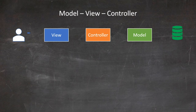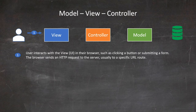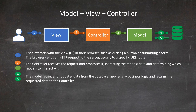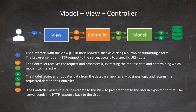First, the user interacts with the UI — such as clicking a button or submitting a form — which is then routed to the running application. The controller receives the request and processes it by extracting data from the request and determining which models to interact with. The model then retrieves or updates data from the database, applies the relevant business rules, and performs any necessary data transformations before returning the processed data to the controller. The controller then provides the data for the view layer to present them to the user in the expected format, effectively updating the UI for the user.